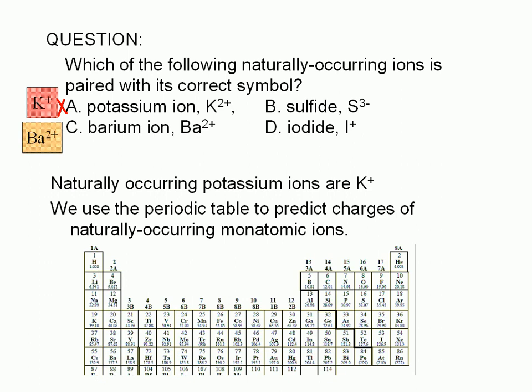The halides, the ions formed from the halogens, which are found in column 17 or group 7A, all have a charge of negative one. Iodine is a halogen. Therefore, iodide, choice D, has a negative one charge.